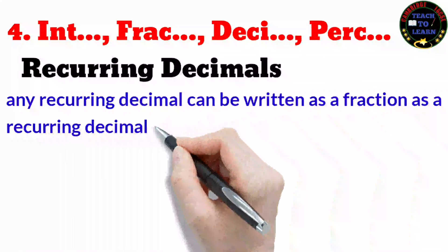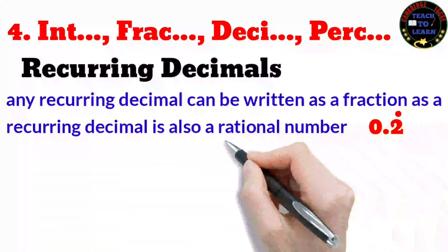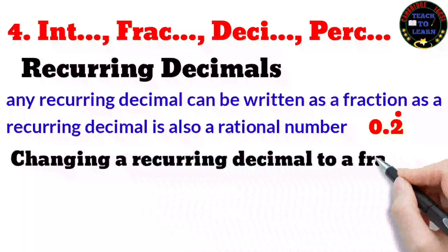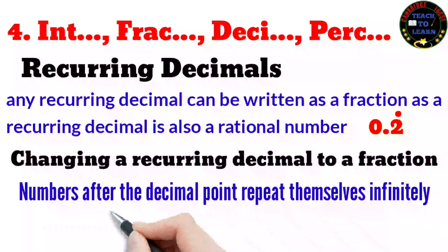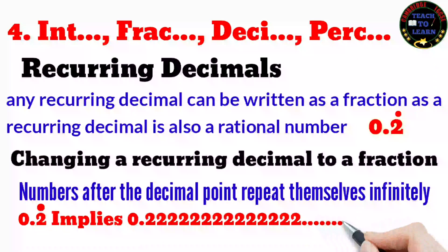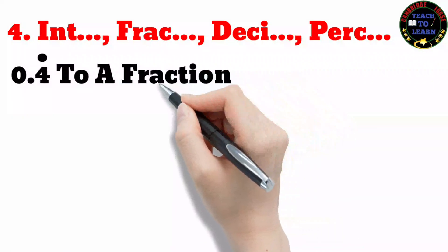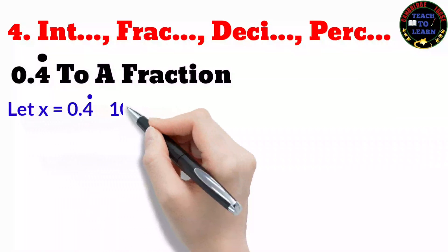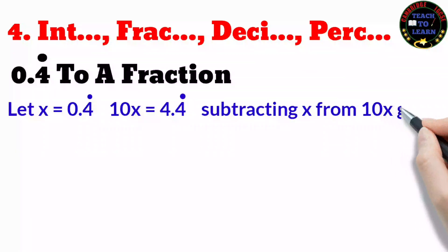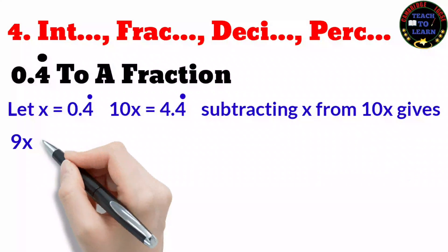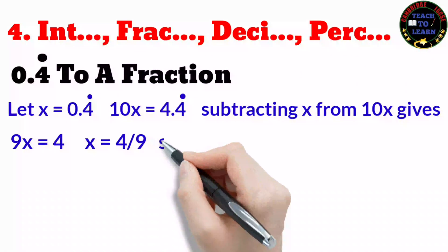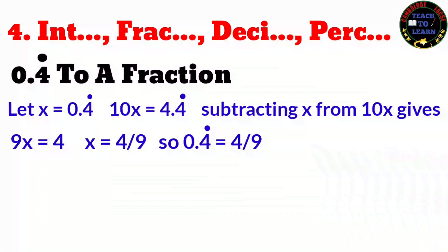A recurring decimal can be written as a fraction since it is a rational number. A recurring decimal is one in which the digits after the decimal point repeat themselves indefinitely. To change 0.4̄ to a fraction: let x = 0.4̄, then 10x = 4.4̄. Subtracting x from 10x gives 9x = 4, so x = 4/9. Therefore 0.4̄ = 4/9.